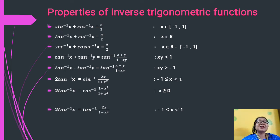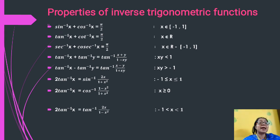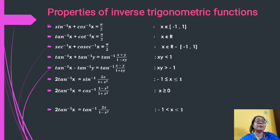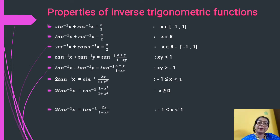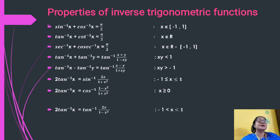Addition property: tan⁻¹(x) + tan⁻¹(y) = tan⁻¹[(x+y)/(1−xy)], where the denominator 1−xy must not be zero, that is xy < 1. Tan⁻¹(x) − tan⁻¹(y) follows the same pattern but gives tan⁻¹[(x−y)/(1+xy)]. Also, 2tan⁻¹(x) = sin⁻¹[2x/(1+x²)], and 2tan⁻¹(x) = cos⁻¹[(1−x²)/(1+x²)], and 2tan⁻¹(x) = tan⁻¹[2x/(1−x²)]. Always mention the range.